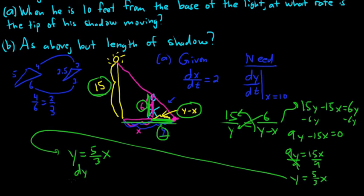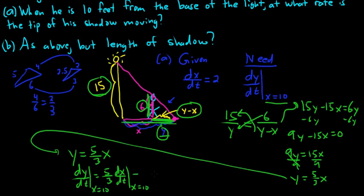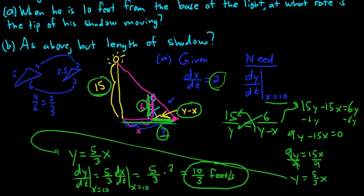Now we just take the derivative of both sides — that's pretty easy. So dy/dt = (5/3)(dx/dt). That's why it's called related rates: we have two related rates of change. dy/dt is the rate of change of the tip of his shadow; dx/dt is how fast he's walking away. At x = 10, there's no x to substitute, so dy/dt = (5/3)(2) = 10/3 feet per second.